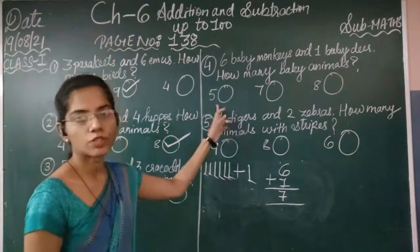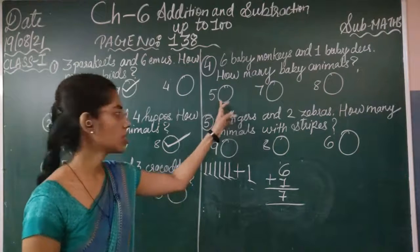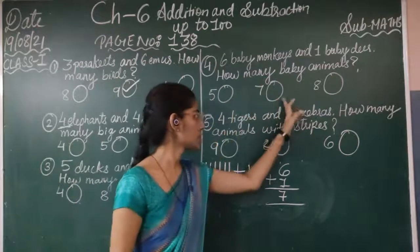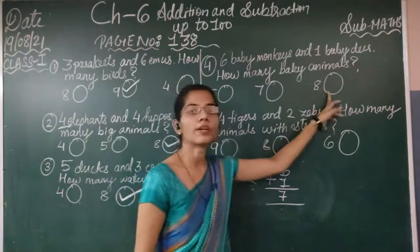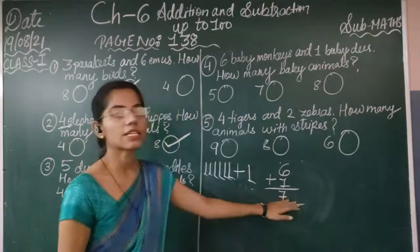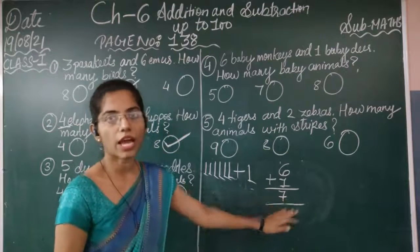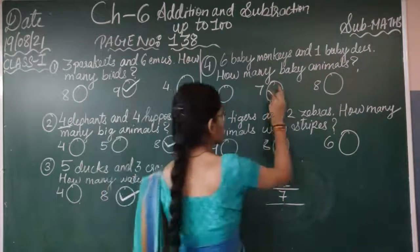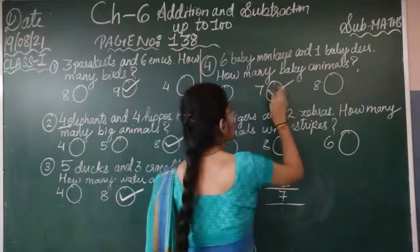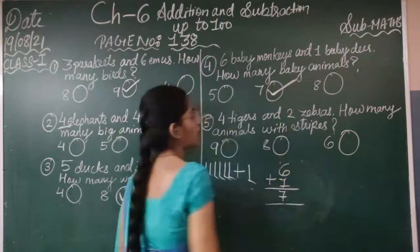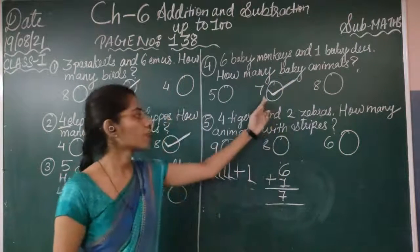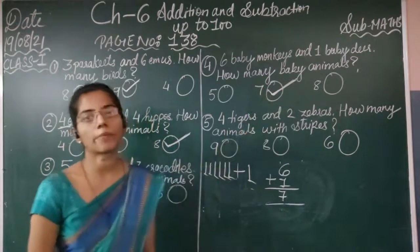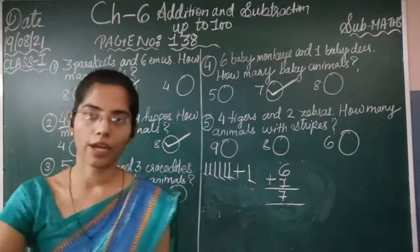Now look at the options. First option is 5, second option is 7, and third option is 8. The correct answer is 7. So we have to tick the second option, which has the number 7.